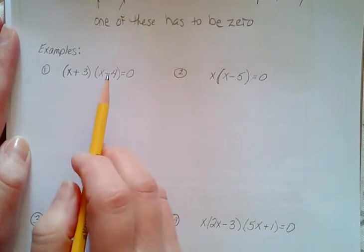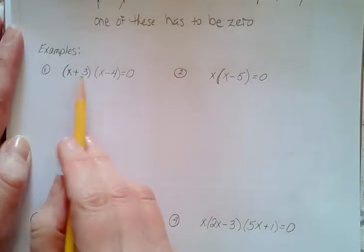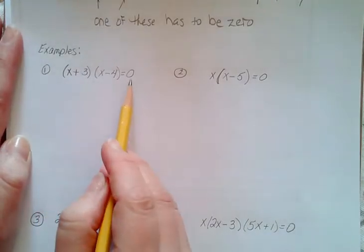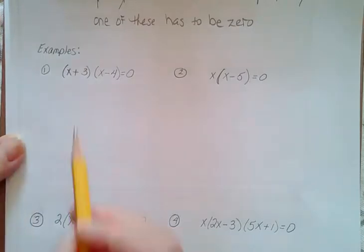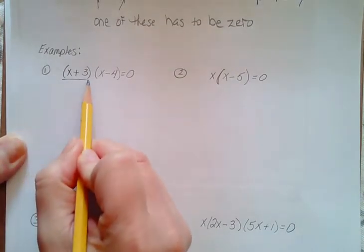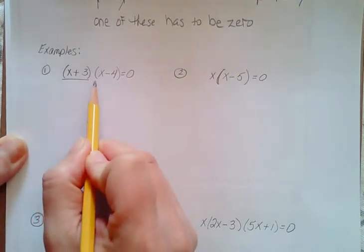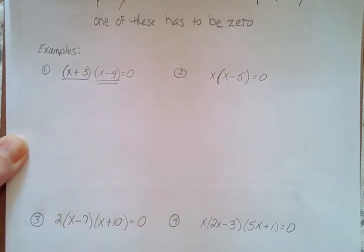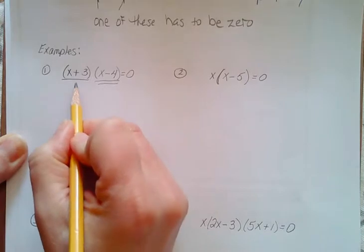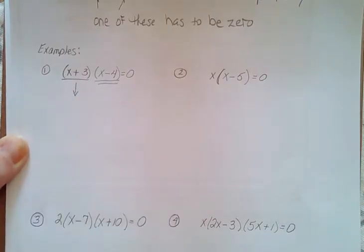So I took the liberty of already prefactoring this for you. So now you have two factors, and we set them equal to 0. So this number times this number equals 0. Well, either this first number here, x plus 3, can be equal to 0.